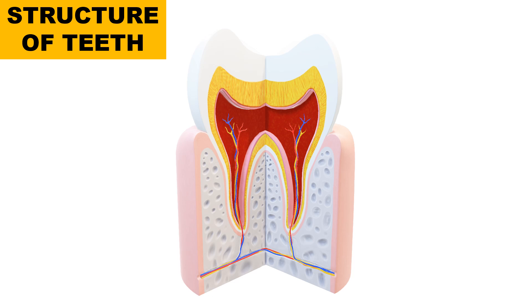The outermost part, which is the whiter one, is known as enamel. This enamel is the hardest material in our body and it is a protective layer of the teeth. It protects the teeth from cavities and other damage. It is mainly formed of calcium phosphates which are arranged in crystal structures called hydroxyapatite.